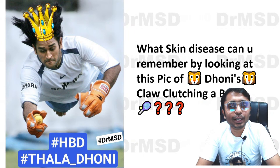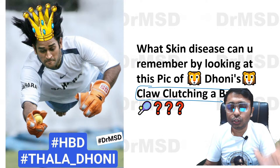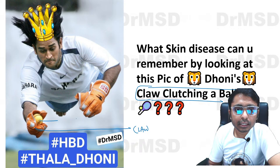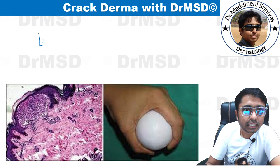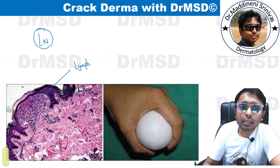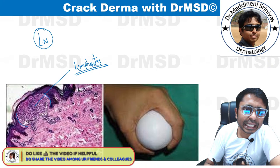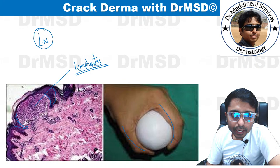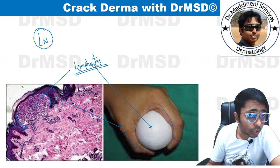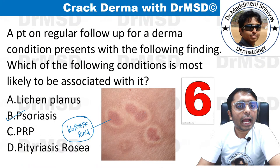In lichen nitidus, the classical histopathological finding is the 'claw clutching a ball' appearance — the rete ridges form the claws and the collection of lymphocytes is compared to a ball. Also remember: mucous membrane lesions are rare in lichen nitidus. Viral infections such as viral warts (caused by HPV) and molluscum contagiosum can show pseudo-Koebner's phenomenon — not true Koebner's — because the new lesions are due to auto-inoculation.